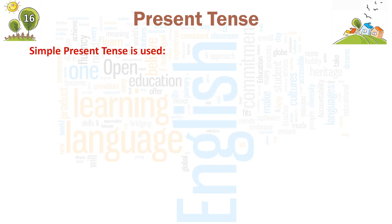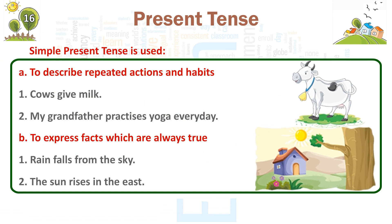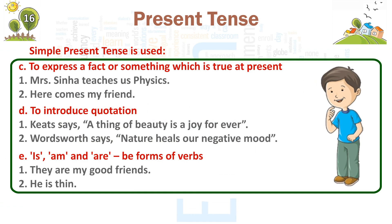Simple present tense is used: A. To describe repeated actions and habits — 1. Cows give milk. 2. My grandfather practices yoga every day. B. To express facts which are always true — 1. Rain falls from the sky. 2. The sun rises in the east. C. To express a fact or something which is true at present — 1. Mrs. Sinha teaches us physics. 2. Here comes my friend.